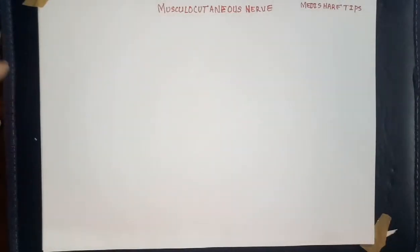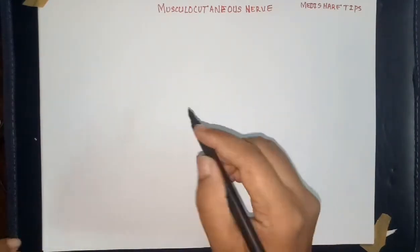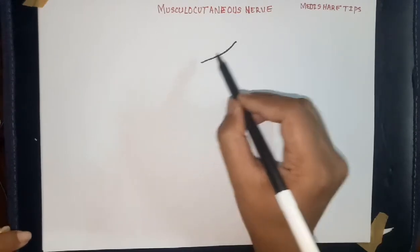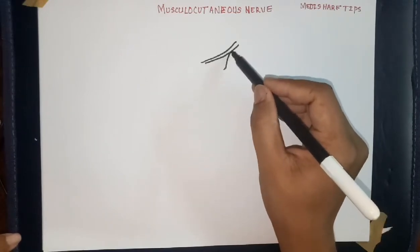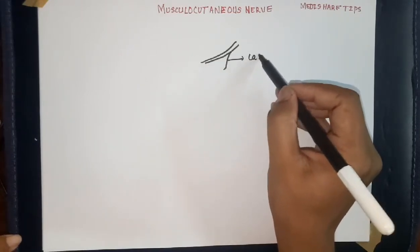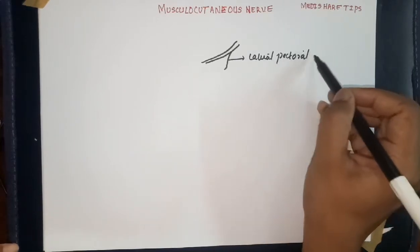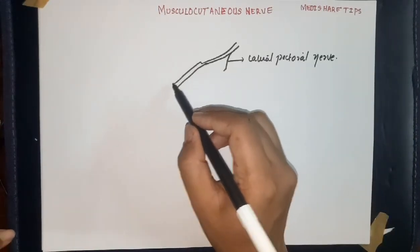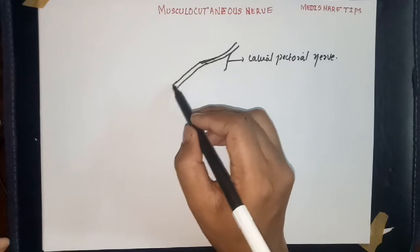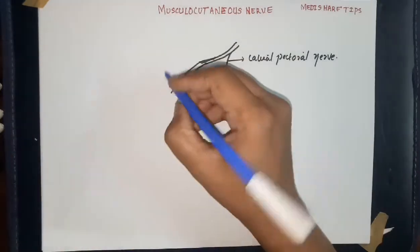Today we are discussing the musculocutaneous nerve. The musculocutaneous nerve is a branch of the lateral cord of the brachial plexus. The lateral cord gives out a branch known as the lateral pectoral nerve, and after giving out the lateral pectoral nerve, the lateral cord of brachial plexus continues as the musculocutaneous nerve.